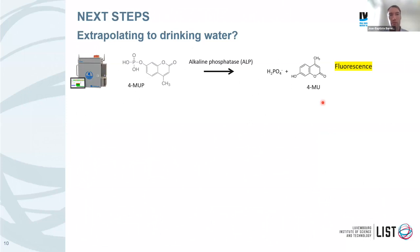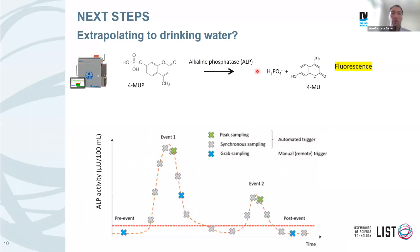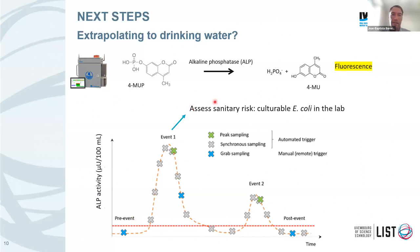We continue to work with the Kulimander and other technologies, moving more into the drinking water network. As Wolfgang explained, there is another enzyme that can be used for total activity — alkaline phosphatase. The idea would also be to use this smart sampling methodology for event sampling in drinking water: if we detect a peak with alkaline phosphatase activity, we could try to sample and assess the sanitary risk for cultural E. coli or other parameters. That's an ongoing work we are conducting.